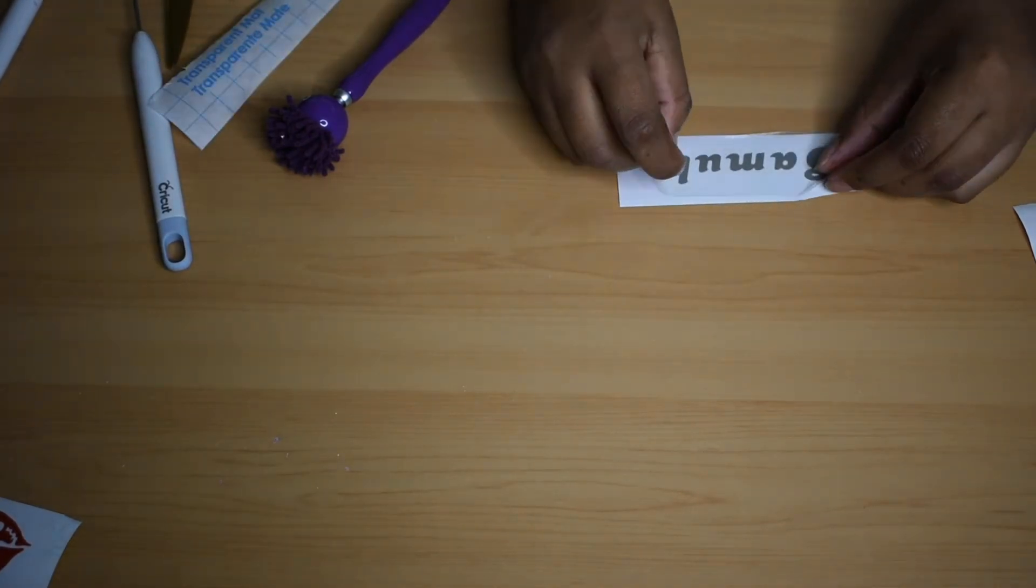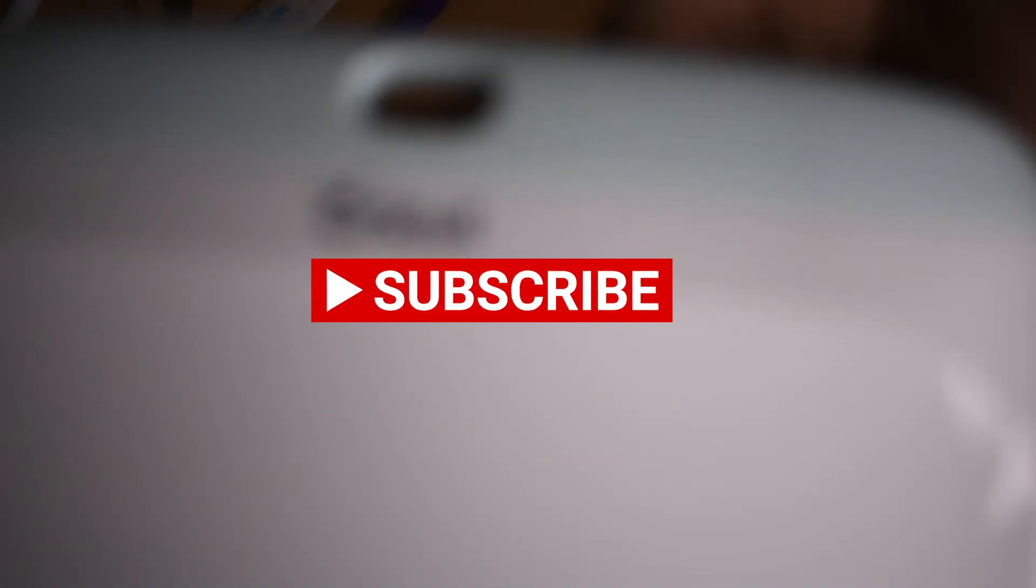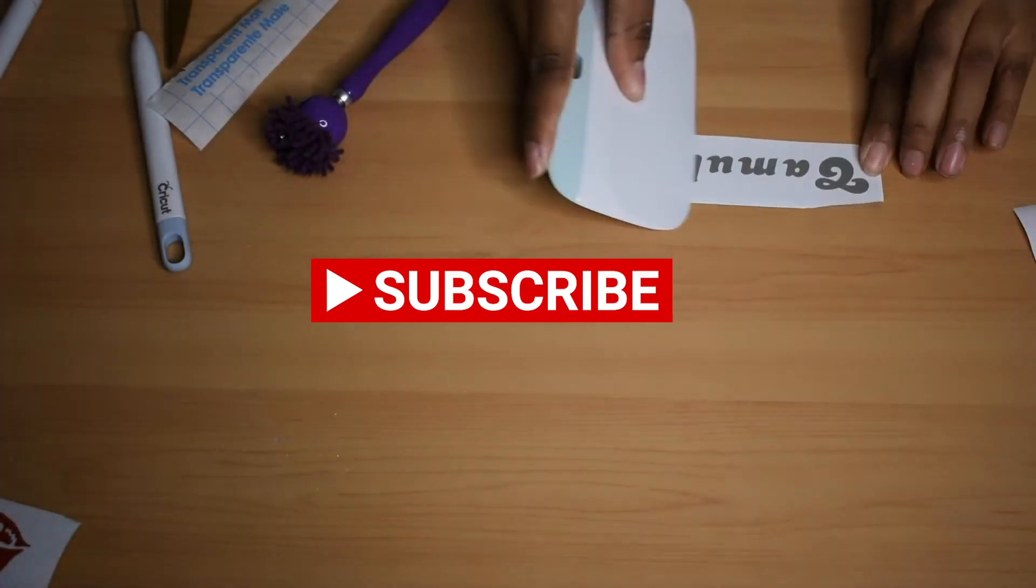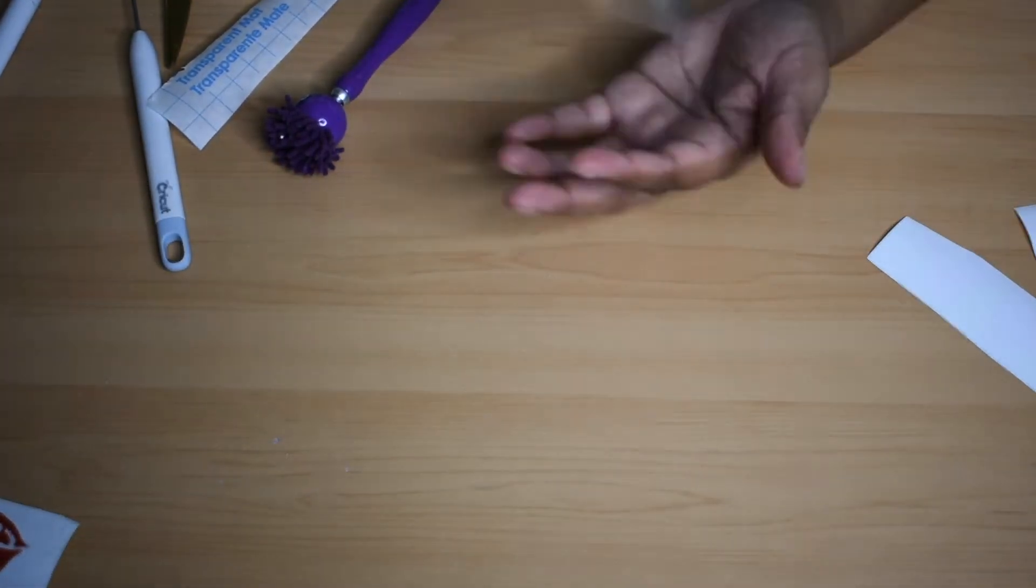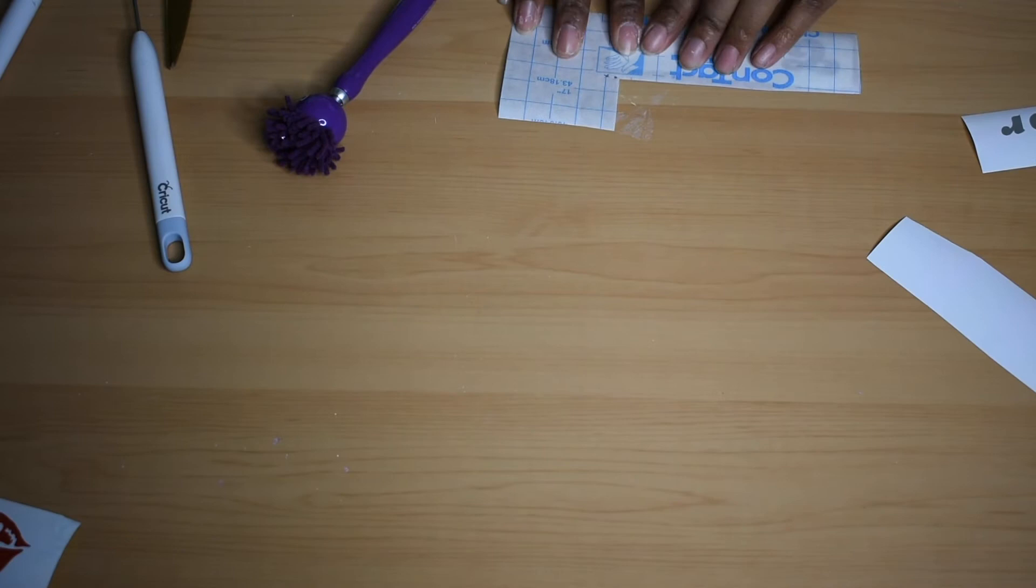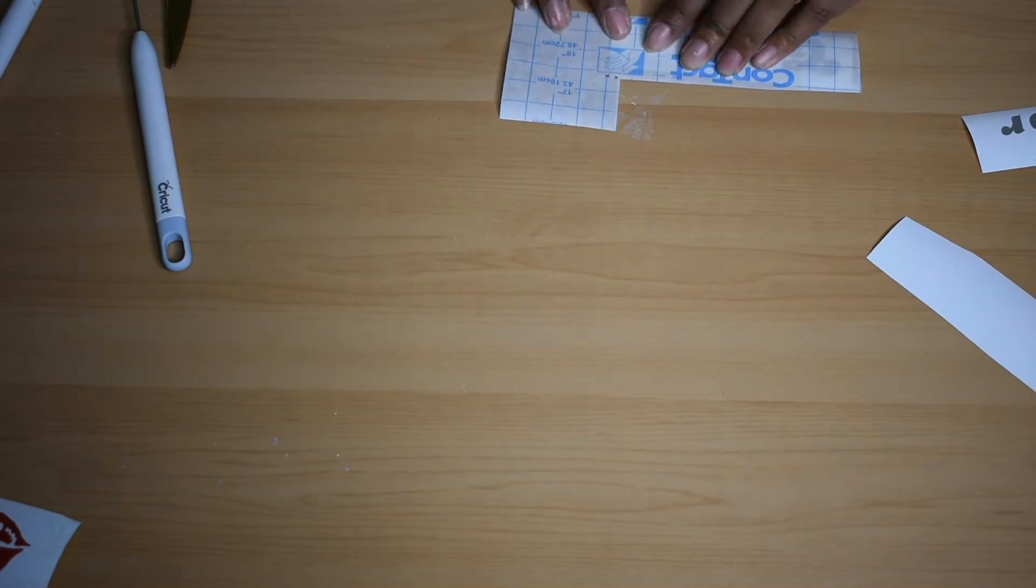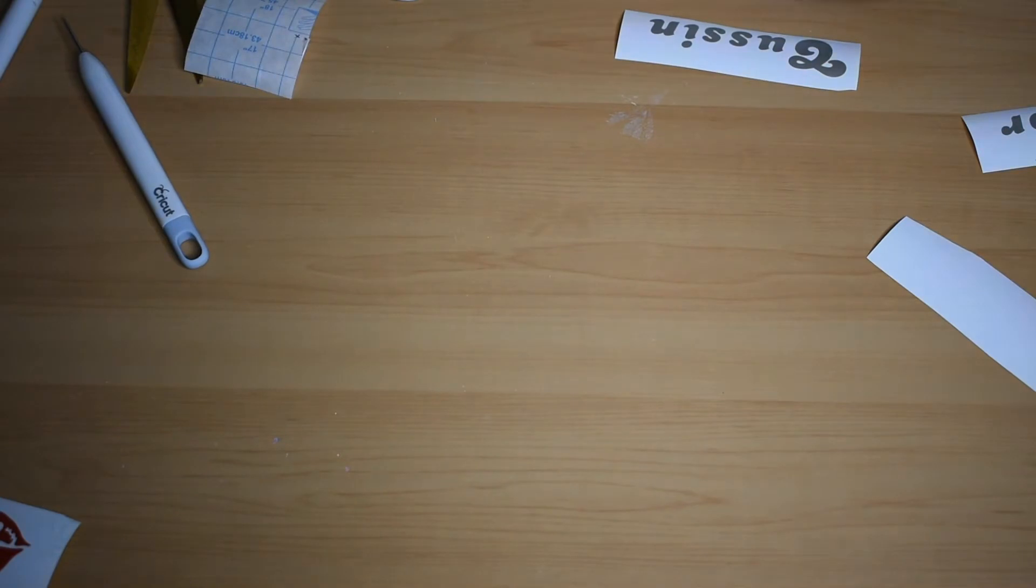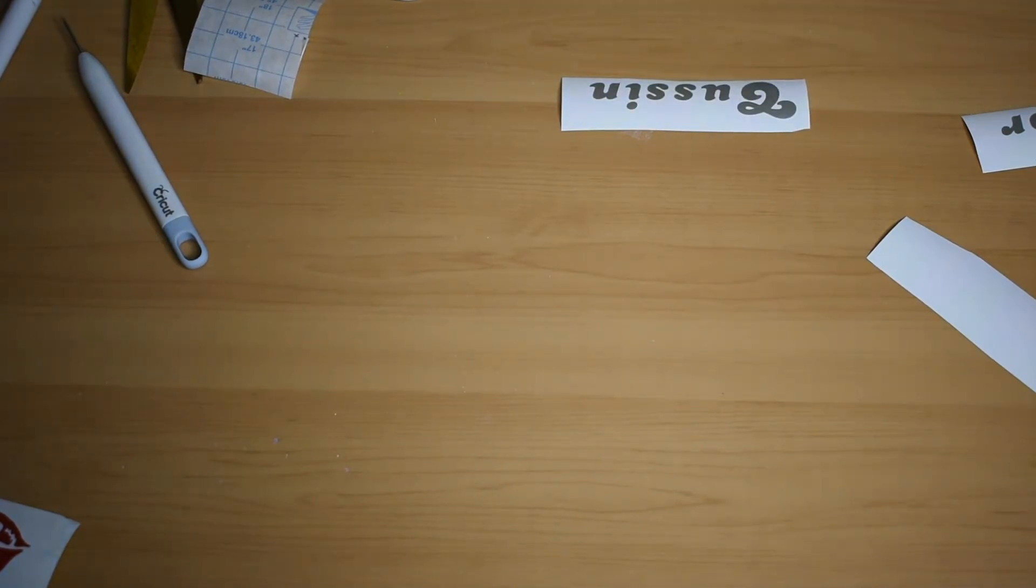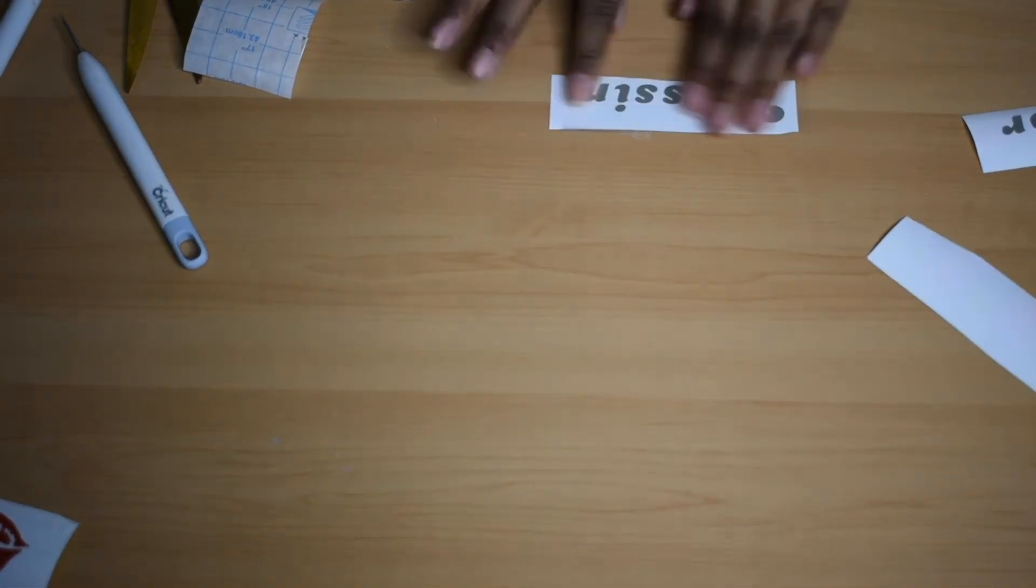After transferring the letters onto the contact paper, I make sure that the letters stick onto the contact paper. What I use is the Cricut scraper. I scrape the front and then I flip it over and scrape the back. So when you see I pull up, it's much easier to get off the transfer tape.